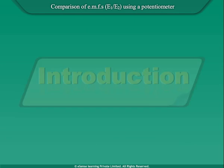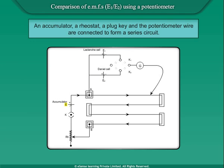Introduction: An accumulator, a rheostat, a plug key, and the potentiometer wire are connected to form a series circuit.